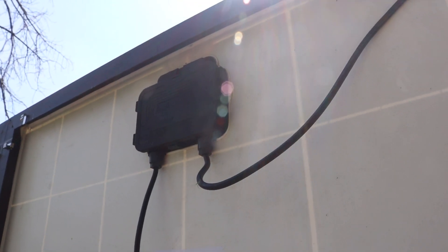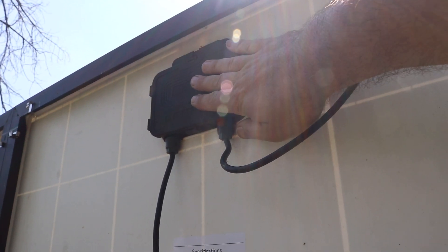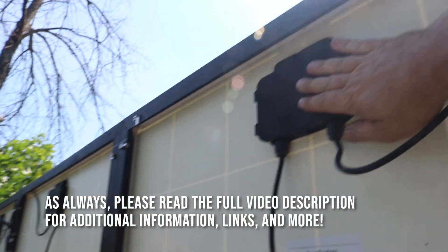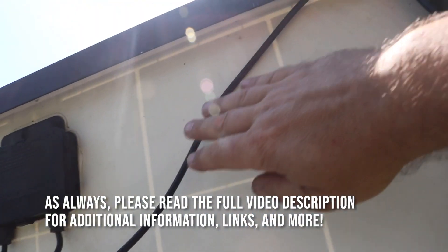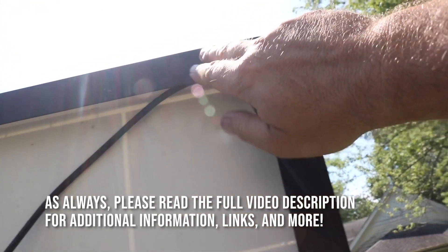Before we run the cables from the solar panels at the junction boxes, I'm going to bring the cables up to the edge of the frame and secure them with these stainless steel clips. These little stainless steel clips do a nice job of holding the cables in place so they won't flop around in the wind when I'm towing.